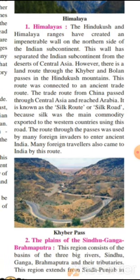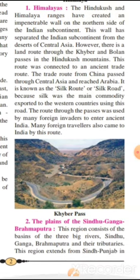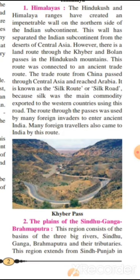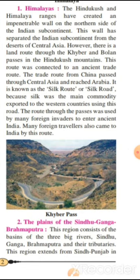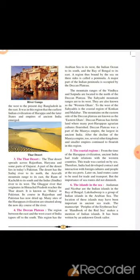The trade route from China passed through Central Asia and reached Arabia. It is also known as the Silk Route or Silk Road, because silk was the main commodity exported to the Western countries using this road. Next is the plains of the Sindhu-Ganga-Brahmaputra. This region consists of the basins of the three big rivers — the Sindhu, Ganga, and Brahmaputra — and their tributaries. The later states and empires of ancient India emerged in this region.